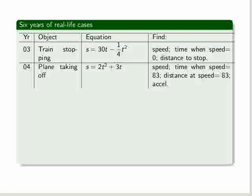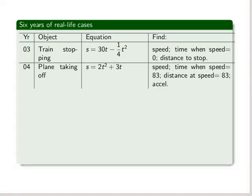In 2004, there was a plane taking off. 2t squared plus 3t was the equation, and we were asked for speed again, the time when speed equals 83, and the distance at speed equal to 83. We were also asked for acceleration, which I've already mentioned how you get.